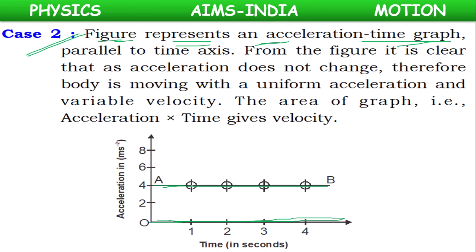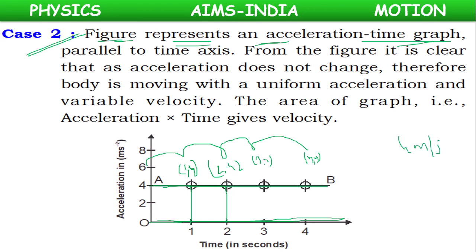In this case, checking at any point on the line, the coordinates are (1,4), (2,4), (3,4), (4,4) — at every point the y-value is constant. This means the acceleration of the body is constant at 4 m/s², which is not changing. So the body is traveling with uniform acceleration.